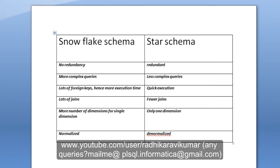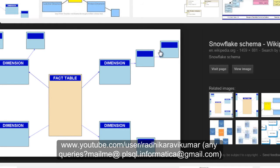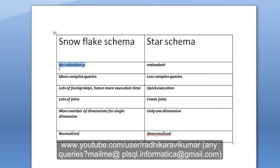Hello friends, Radhika Ravikumar here. In this tutorial we'll see the difference between snowflake and the star schema. There are about five to six differences between them. The first one is redundancy. The snowflake schema is a normalized schema — as we know, normalization is done to reduce redundancy — so snowflake schema has no redundancy. The star schema, on the other hand, is very much redundant because it is in denormalized form.